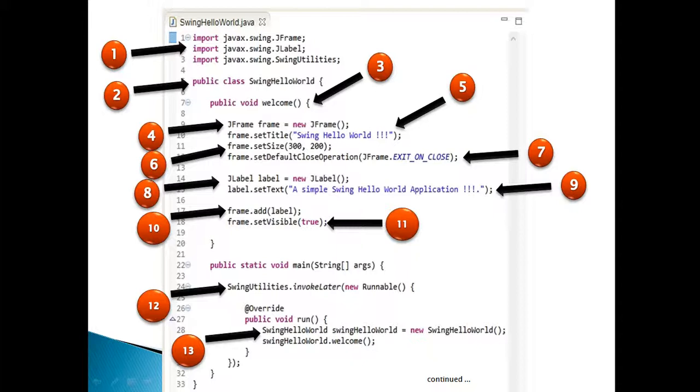Moving ahead. Step 13, create instance of swing hello world class created above. Call welcome on the instance to display GUI with a frame and a label to it.